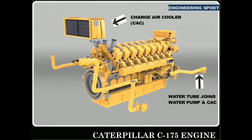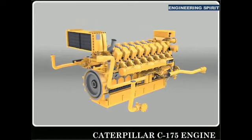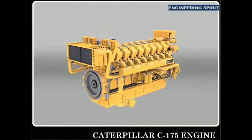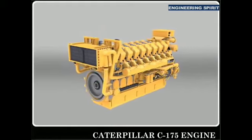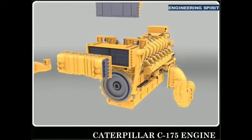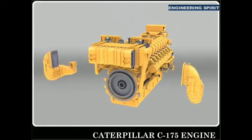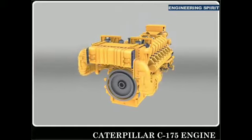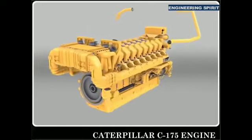Air cooler, air filter, water tube joints. The air filter has a number of layers. Ducts connect the CAC to the inlet manifold on both sides. Air intake ducts.